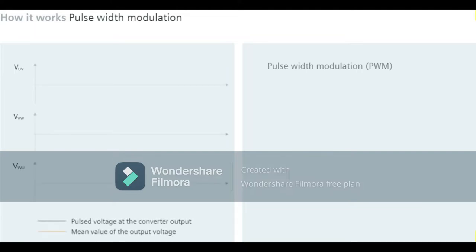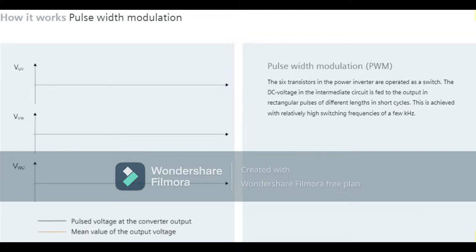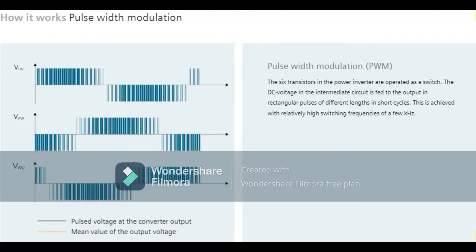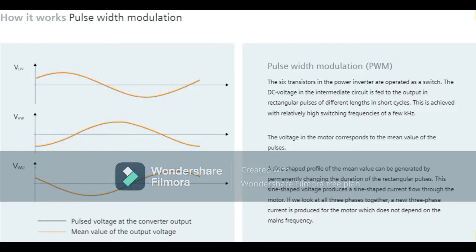Pulse width modulation, PWM for short, is a process which generates an analog signal from a digital signal. The transistors, as mentioned previously, are an integral part of the power inverter and are operated at a high switching frequency. The variable pulse-pause ratio is able to generate a sine-shaped profile for the mean current value. This produces a sine-shaped current profile, and if we look at all three phases together, a new three-phase current is produced for the motor which does not depend on the mains frequency.